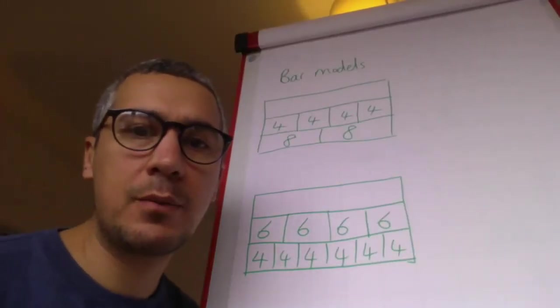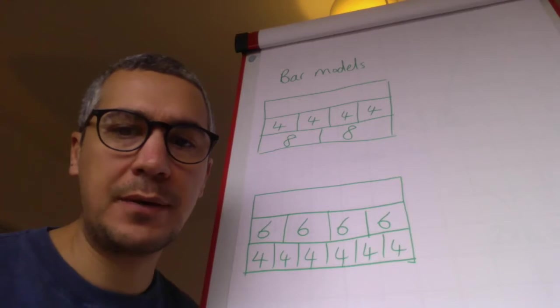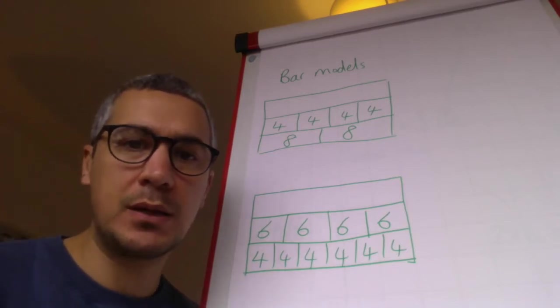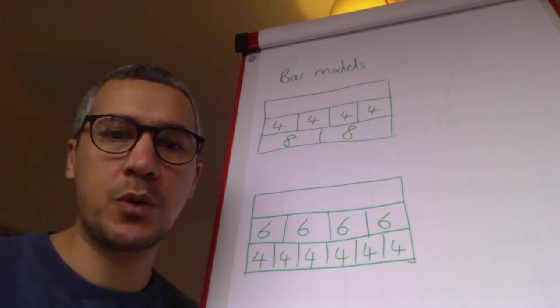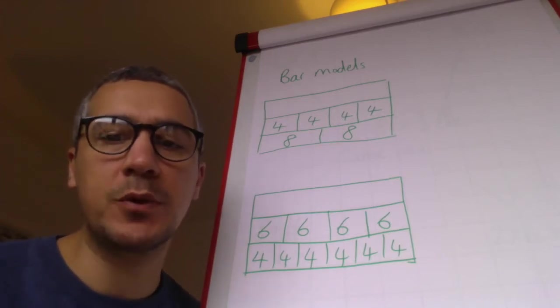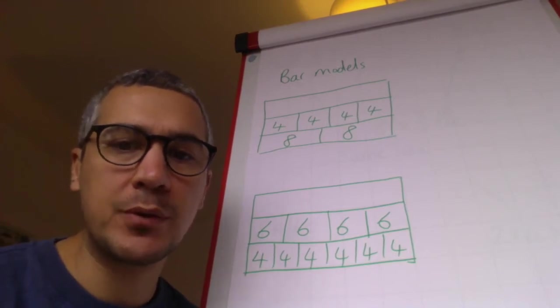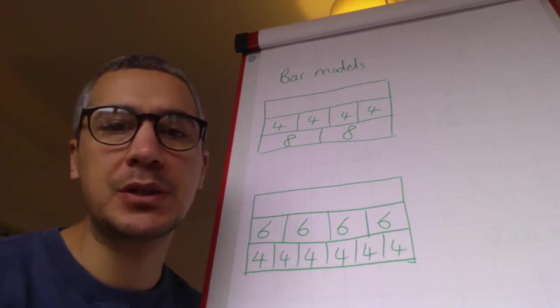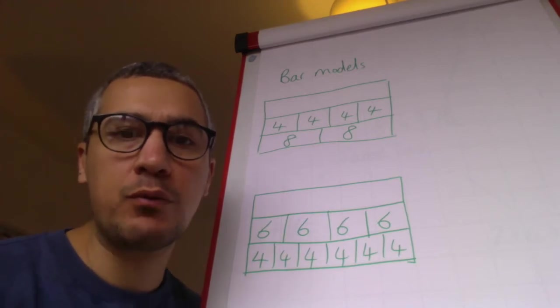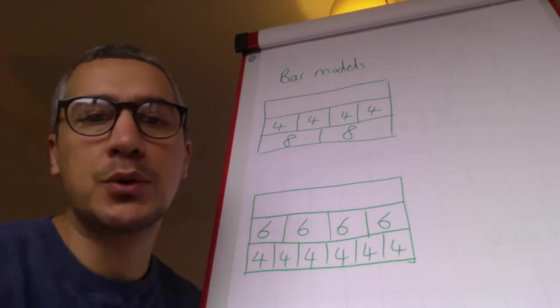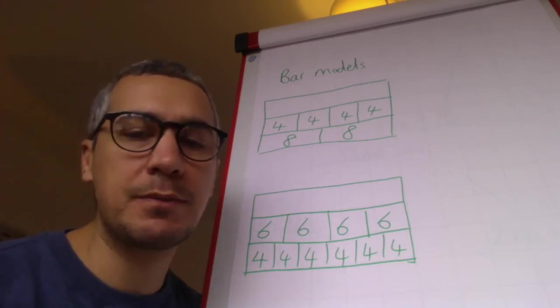Hi there, good afternoon, and welcome to lesson five of lockdown maths. Today we're looking at bar models, which some people, especially adults, may not have seen before. These come from Singapore and they're proven to show a different representation of multiplication. They're a really good way to show a visual model of how multiplication works.